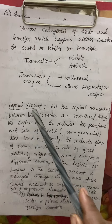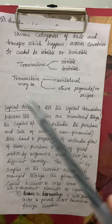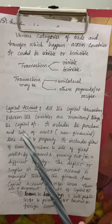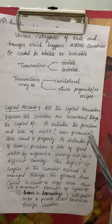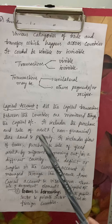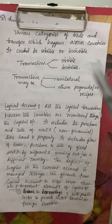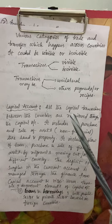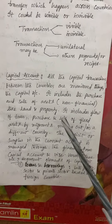The second component is the capital account. All capital transactions between countries are monitored here. It includes the purchase and sale of assets — non-financial in nature — such as land or property purchased or invested in other countries. The value of these assets is added on the receipt side of the balance of payments.